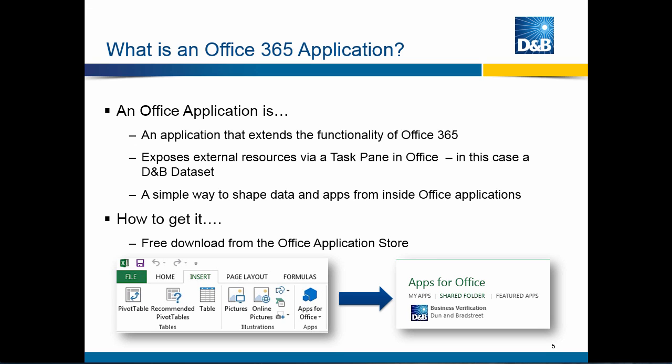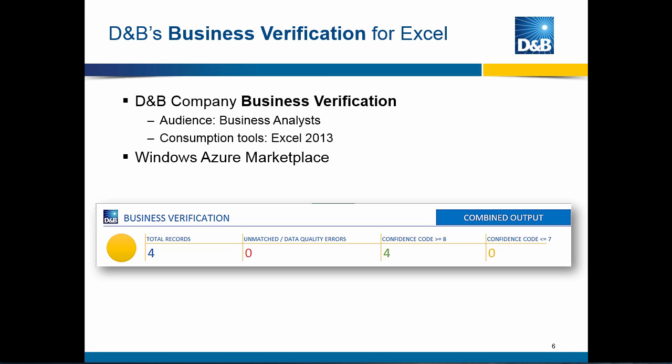To get it, you open Excel and go to Apps for Office, and you search for Business Verification. Once you get it, you'll see a template that has a summary shown at the top with how many records you're submitting for processing and then what the results are. This is going through a service that you can also look at through the Windows Azure Marketplace. Dun & Bradstreet has some other data services out in the Azure Marketplace, and we'll talk more about those as we complete the screencast.